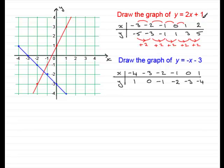Let's have a look at this plus 1. You'll notice that when you put x equals 0 through the equation, two times 0 is 0, add 1, and y turns out to be 1. When x is 0, y is 1, and where do you find that point? You find it here on the y-axis. We call this the y-intercept.